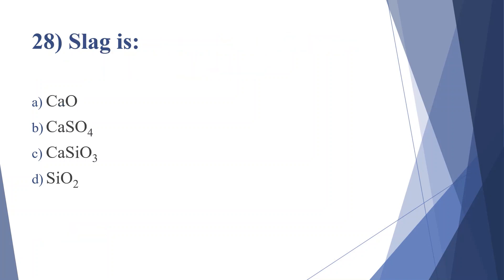Twenty-eighth question: slag is — option A: CaO, option B: CaSO4, option C: CaSiO3, option D: SiO2. Answer is option C, CaSiO3.